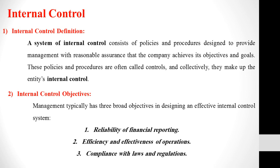There are three main objectives that management considers when building an effective internal control system. The first objective is reliability of financial reporting; the second objective is efficiency and effectiveness of operations; and the third objective is compliance with laws and regulations. Let's discuss every objective in more detail.